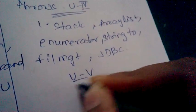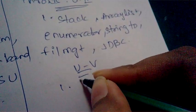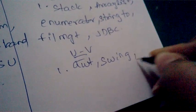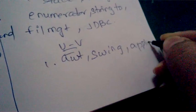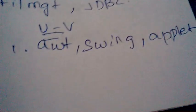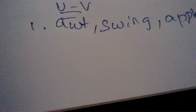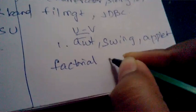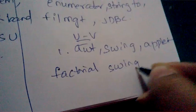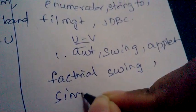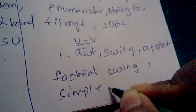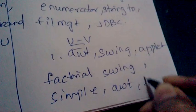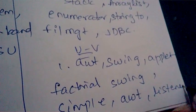Also in Unit Four: what is the concept of file management and the File class, and what is JDBC and why do we use it. Coming to Unit Five, important questions are: what is AWT hierarchy, what is Swing hierarchy, what is the applet concept, write a program on factorial using the Swing concept, write a simple applet program, write a program using AWT, and what are listeners.